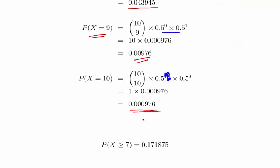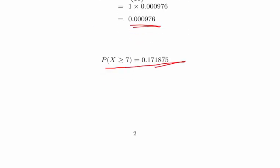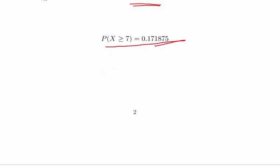There we go. Just that is 1. Essentially 0.000976. And just add that all up. And we get 0.171875. Now you might use tables to work with that as well.